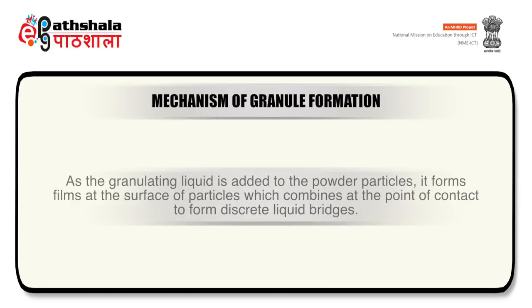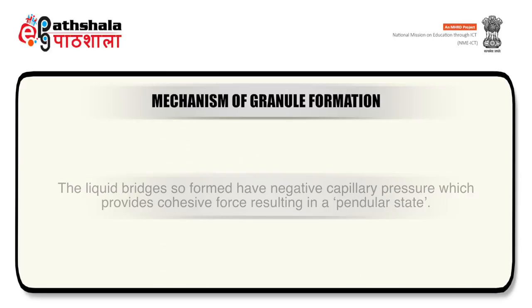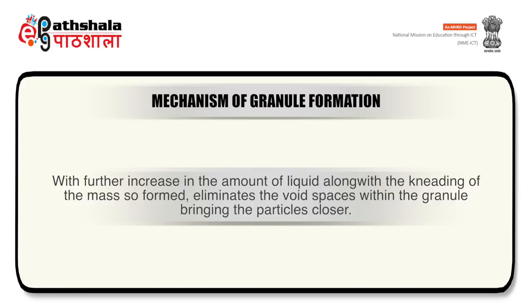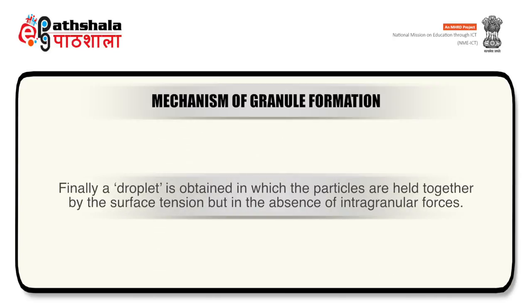Regarding the mechanism of granule formation: as the granulating liquid is added to powder particles, it forms films at the surface of particles which combine at points of contact to form discrete liquid bridges. The liquid bridges formed have negative capillary pressure which provides cohesive force, resulting in a pendular state. With increased liquid content, a funicular state is obtained caused by coalescence of bridges. Further increase in liquid along with kneading eliminates void spaces within the granule, bringing particles closer. A capillary state is then obtained due to bonding by interfacial forces at the granule surface and negative capillary pressure in the interior. Finally, a droplet state is obtained where particles are held together by surface tension but in the absence of intragranular forces.